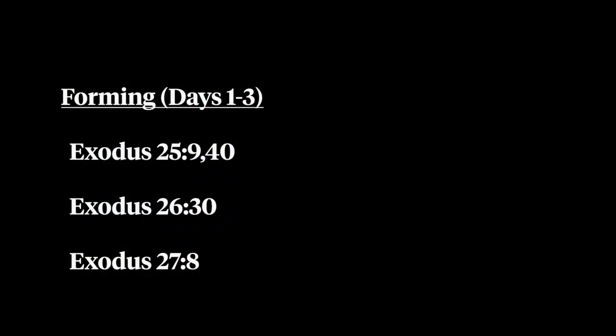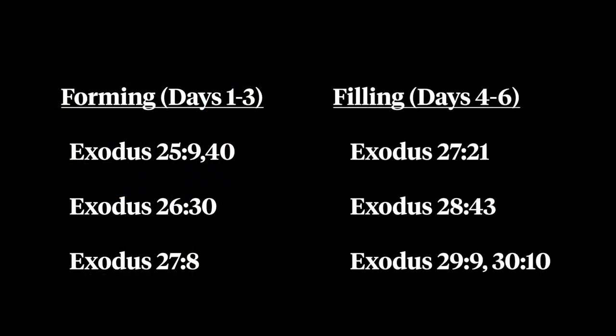The ordinance or generation phrases, in chapter 27 verse 21, chapter 28 verse 43, chapter 29 verse 9, and chapter 30 verse 10, all refer to the filling stage where the newly formed order is filled and apportioned to rulers. If we divide these out according to the days of creation, we notice some further parallels to be drawn.